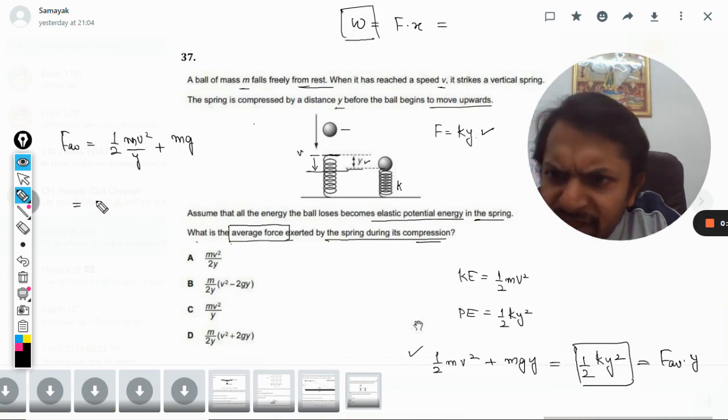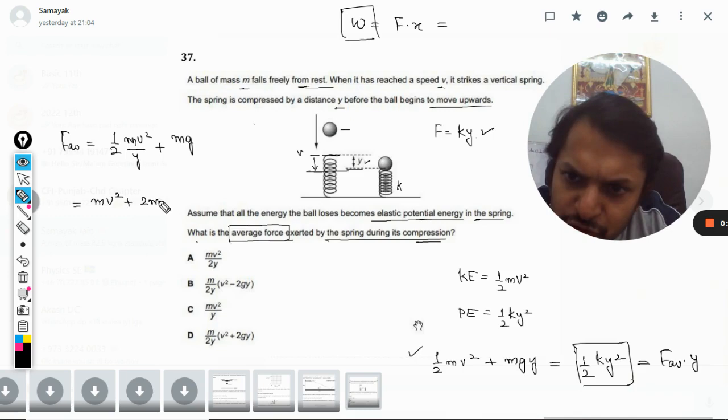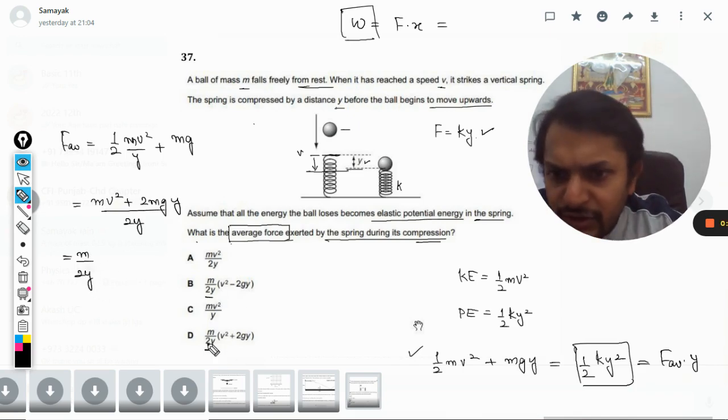So now what do we want? We take the LCM here: mv squared plus twice of mgy, divided by 2y. And now we take m by 2y common, because in these two equations they have taken this common.